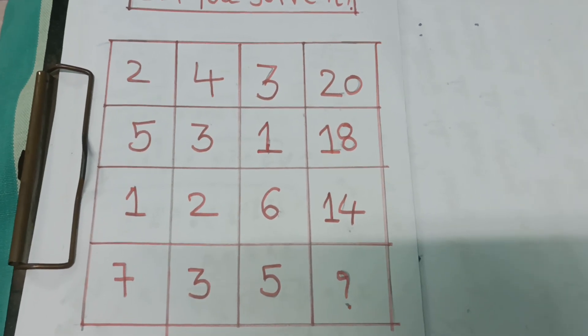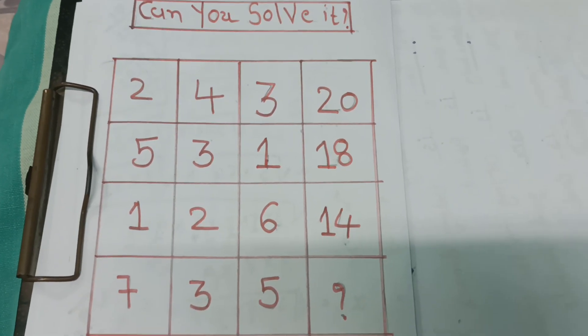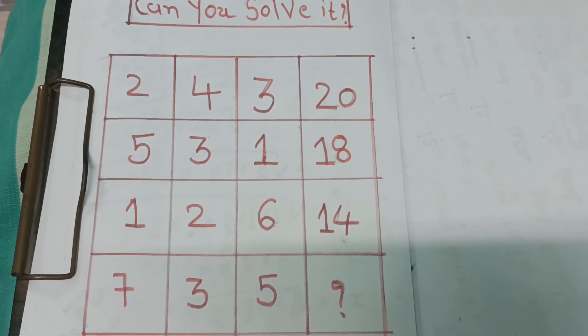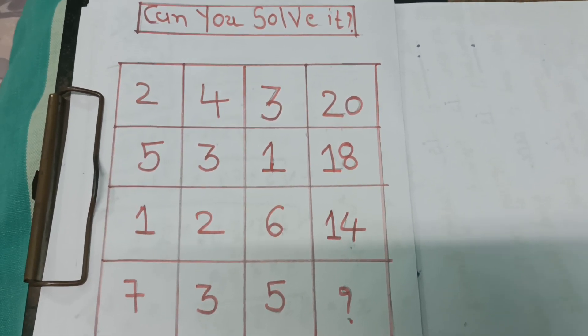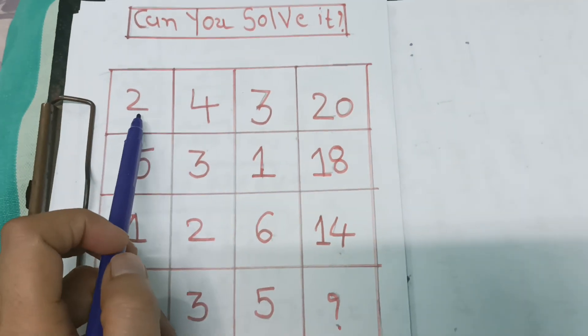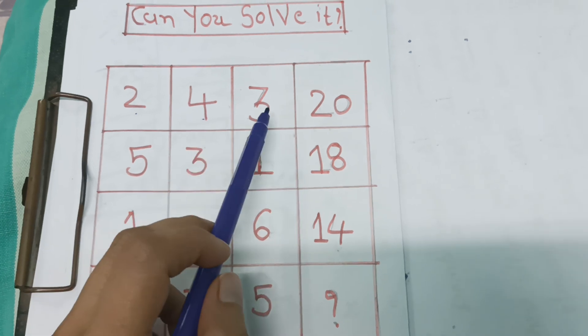Okay, 10, 9, 8, 7, 6, 5, 4, 3, 2, 1, stop. See here it is 2, it is 4, and it is 3.